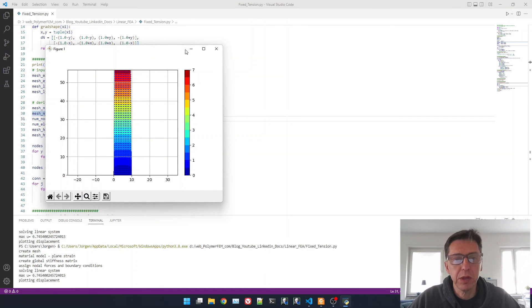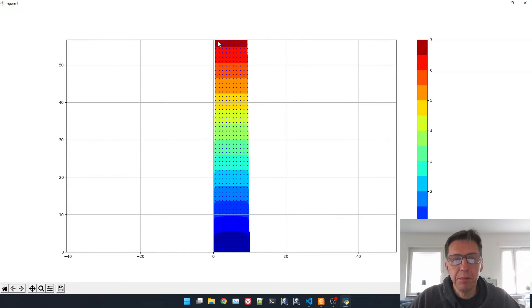It ran through. I get this window that was created. I'm going to try to make it a little bit bigger. Here is the bar that's being pulled out and it shrinks sideways. And we see the maximum displacement is slightly less than seven millimeters, which is exactly consistent with what we had in our estimation earlier.